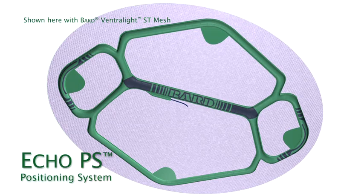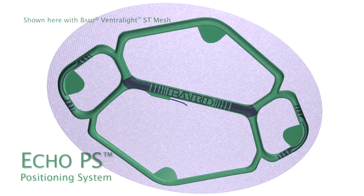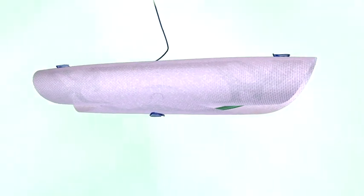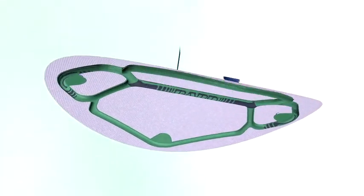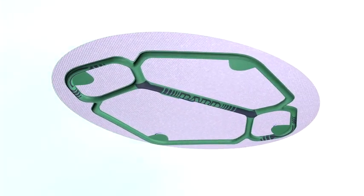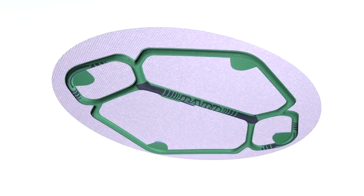The ECHO-PS Positioning System is designed for today's laparoscopic surgeon to facilitate an efficient and reproducible repair. It consists of a low-profile balloon that comes pre-attached to a piece of Ventralite ST Mesh.